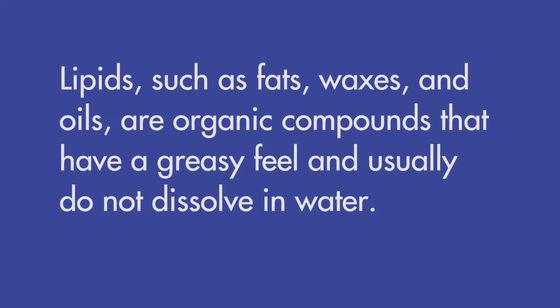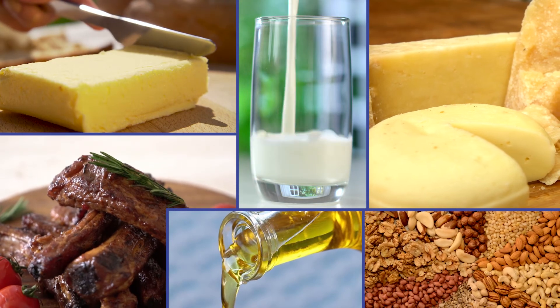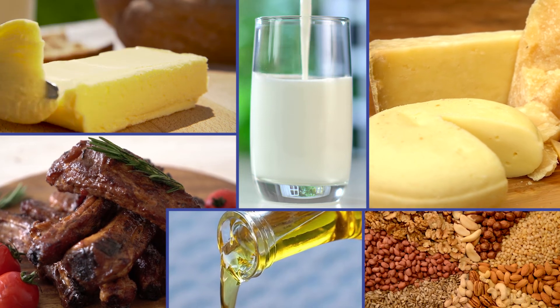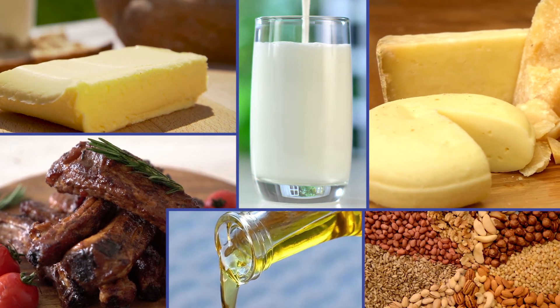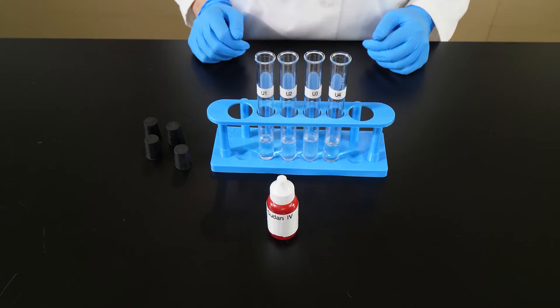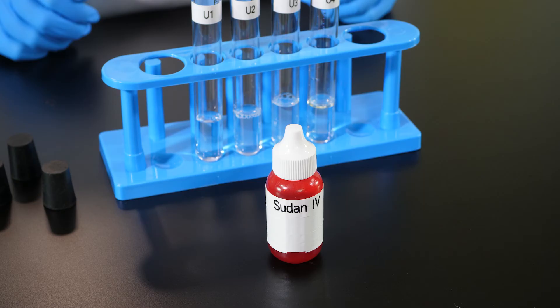Our last nutrient test will be for lipids. Lipids, such as fats, waxes, and oils, are organic compounds that have a greasy feel and usually do not dissolve in water. Lipids are found in such foods as milk, cheese, butter, vegetable oil, shortening, red meat, and nuts. To detect lipids in a solution, we use a chemical indicator called Sudan 4.